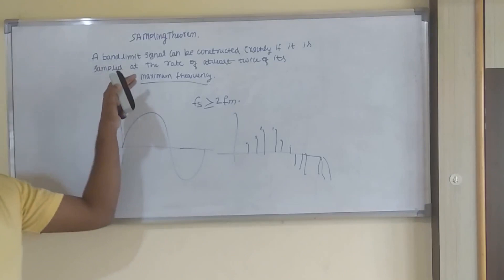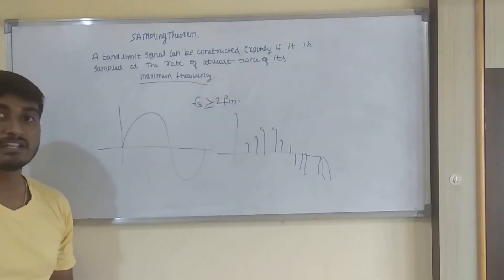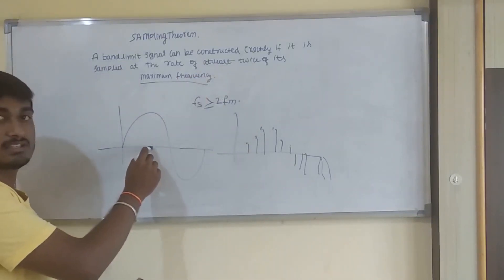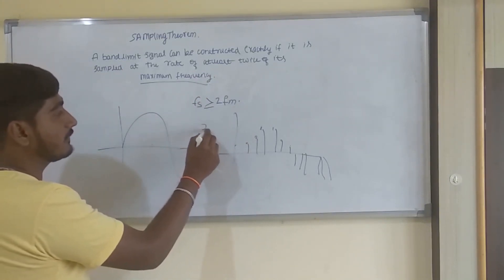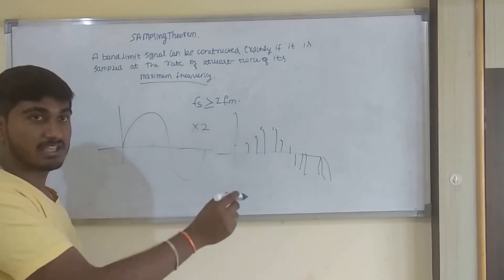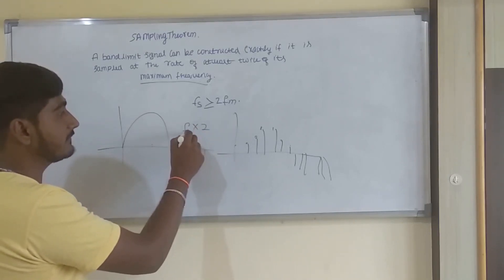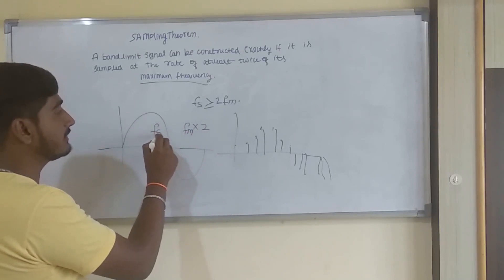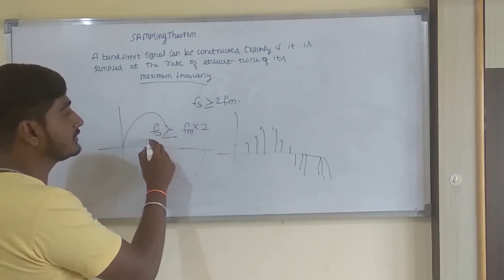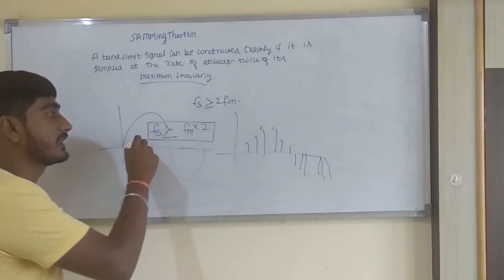Twice of its maximum frequency, a band limited signal can be reconstructed exactly if it is sampled at the rate of twice its maximum frequency. If we consider the maximum frequency value as Fm, then the sampling frequency should be greater than or equal to two times Fm.